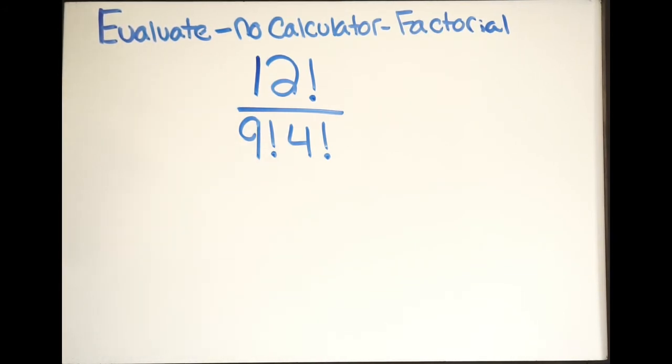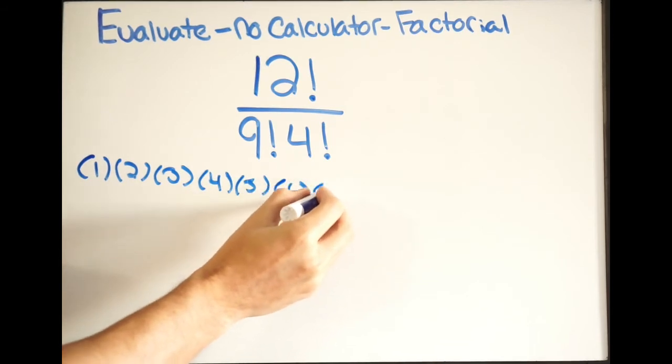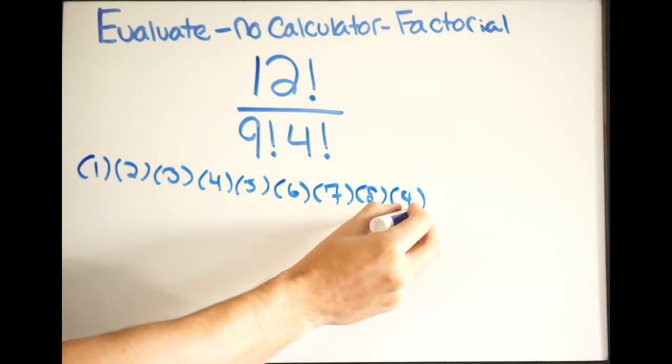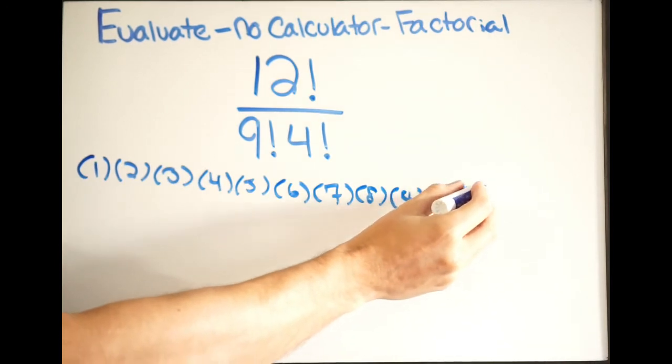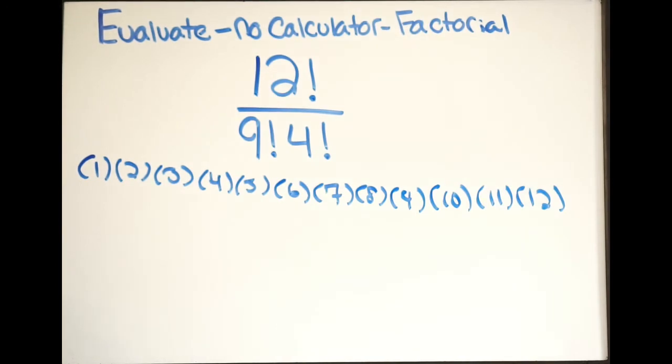So for example, if I have 12 factorial, I would write that out the following way. I would do 1 times 2 times 3 times 4 times 5 times 6 times 7 times 8 times 9 times 10 times 11 and then times 12. That is going to be 12 factorial expanded out.